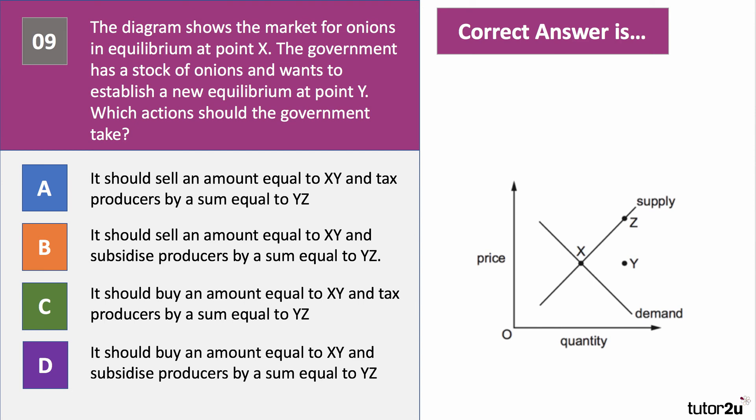Question nine — quite a tricky one. The diagram shows the market for onions currently in equilibrium at point X. The government has a stock of onions and wants to establish a new equilibrium at point Y, the intersection between supply and demand. The question is: which two actions should the government take? Press pause and have a go. To move the equilibrium from X to Y, visualise or sketch what needs to happen to supply and demand for there to be a new equilibrium crossover point.